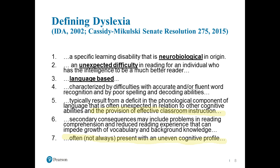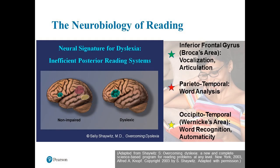With regard to neurobiology, this comes from preeminent researchers Sally and Bennett Shaywitz out of the Yale Child Study Center, really showing their own signature for dyslexia. Looking at the non-impaired brain pathway on the left-hand side, we tend to see a pathway that includes not only Broca's and the parieto-temporal areas but also Wernicke's areas — a pathway that invokes articulation and vocalization of words with word analysis and recognition or automaticity.